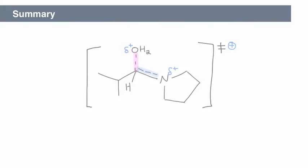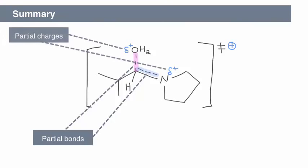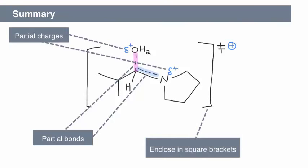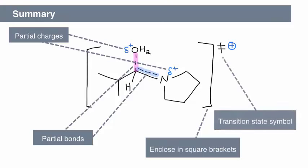In this video, you learned to draw the transition state structure of a mechanistic step, given the starting materials and products. It's important to depict the breaking and forming bonds with dashed lines, show the partial charges, enclose the structure in square brackets, draw the transition state symbol, and include the overall charge.